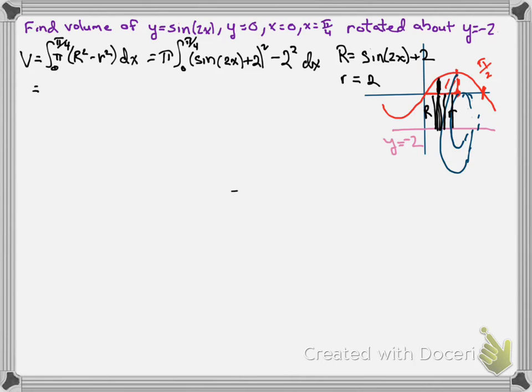Now we do need to foil out that first part right here. So that's going to be what we do next, because we're going to end up with a sine squared in here which is going to require an identity. So our limits aren't changing. Now let's foil that out. We get sine squared of 2x plus 4 sine of 2x plus 4, and then minus a 4 because of the 2 squared, dx.